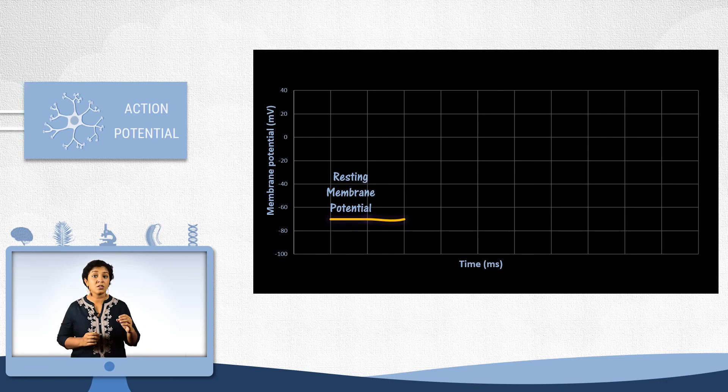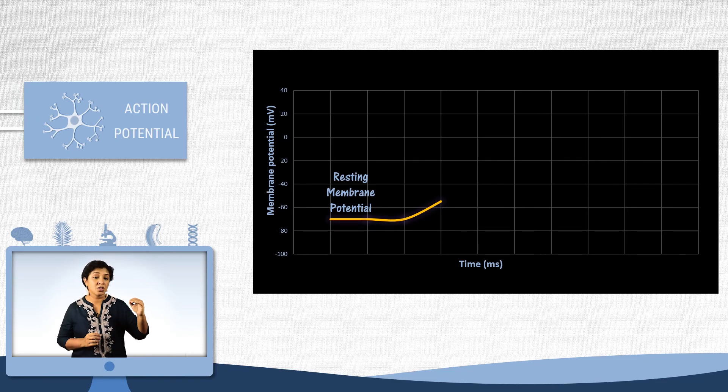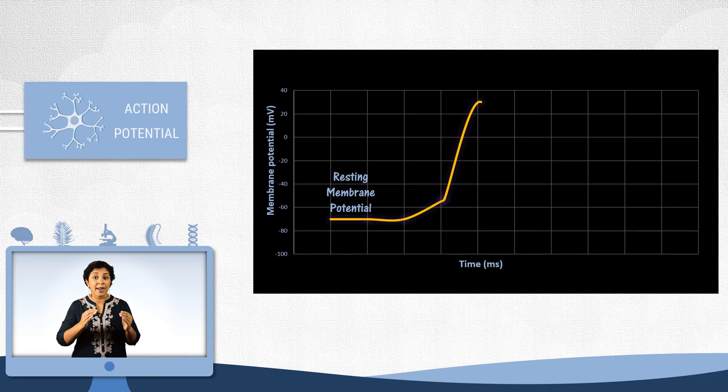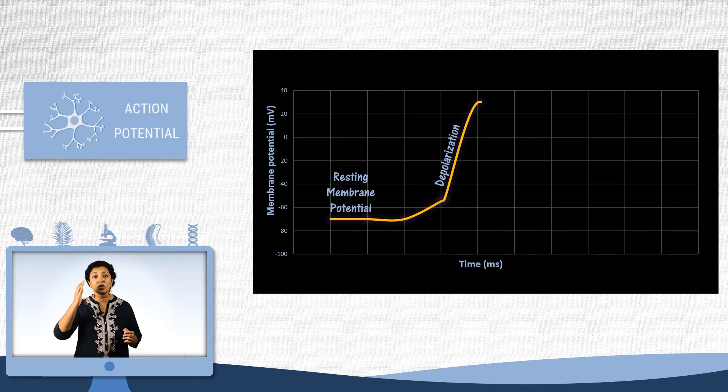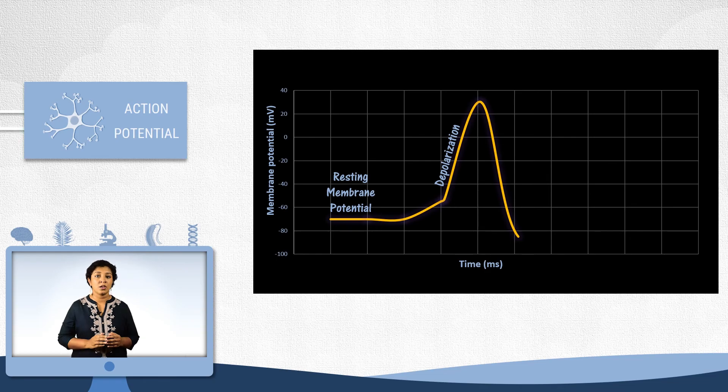Now when a stimulus reaches the neuron, it makes the membrane more positive. And if the voltage reaches about minus 55mV, then an electrical impulse will fire. Here the voltage will rise and the membrane charge will reverse, reaching about 20 to 30mV. This is known as the depolarization stage. After a few milliseconds, the voltage will fall steeply reaching about minus 90mV. This is known as the repolarization stage.